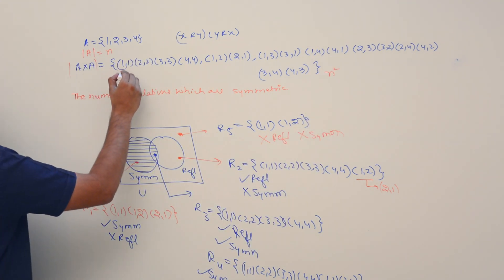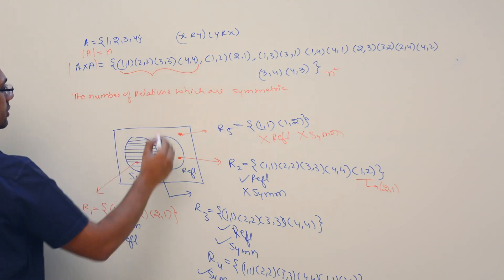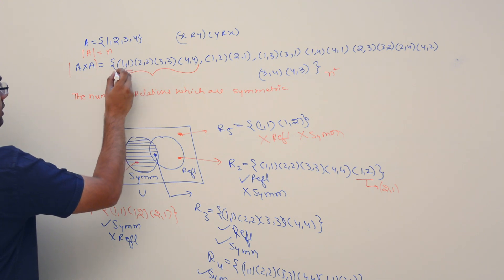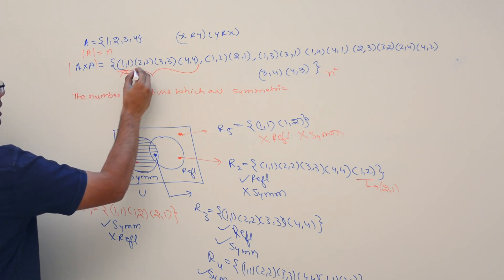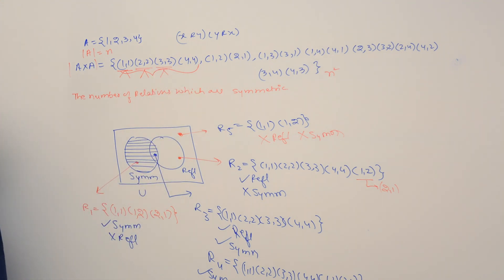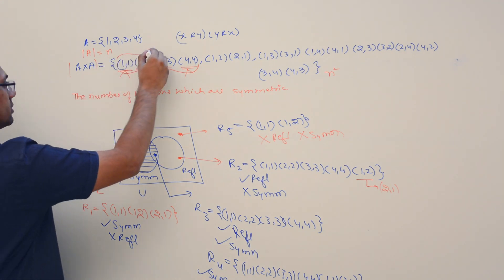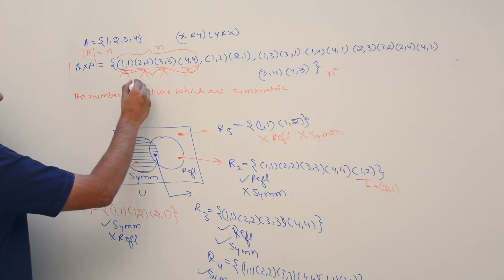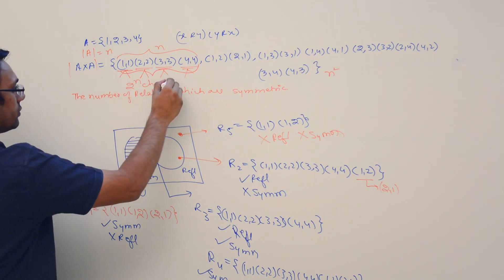For the diagonal elements — that is (1,1), (2,2), (3,3), (4,4) — if a relation has to be symmetric, then for each of these diagonal elements we have two choices: either this element can be there in the symmetric relation or not. These are total n elements, so for these n elements we have 2^n choices.